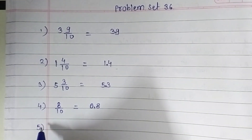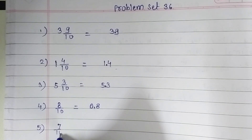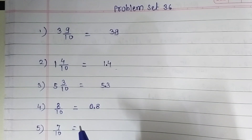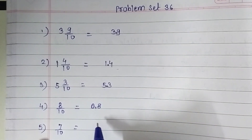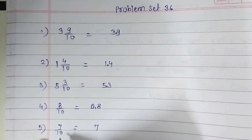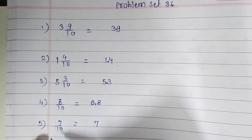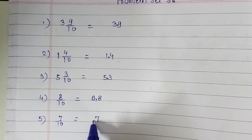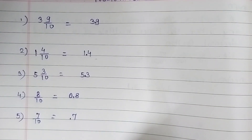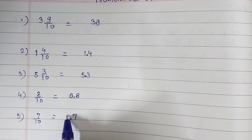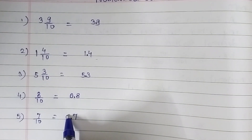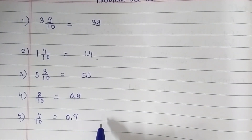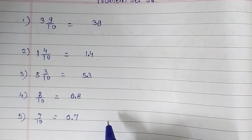The fifth question is 7 upon 10. Here also they don't give a whole number, so just write the numerator. Look at the denominator — it has only one zero, so we leave one place from our right-hand side and place our decimal point. For the whole number we put a zero. So 0.7 is the decimal fraction. This is the solution for our problem set 36.